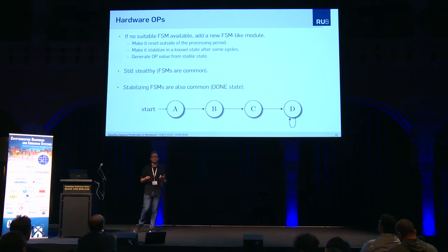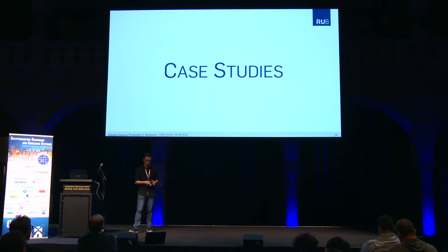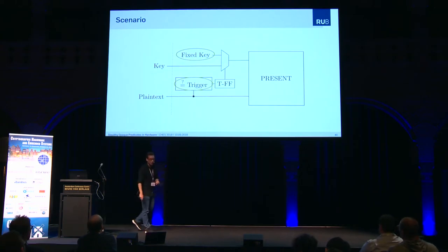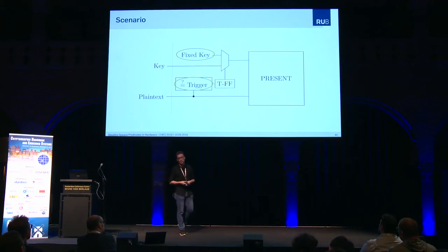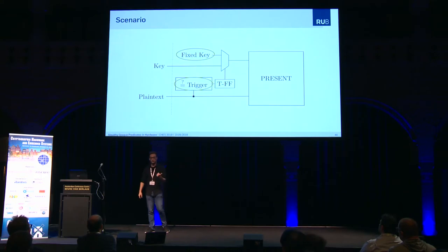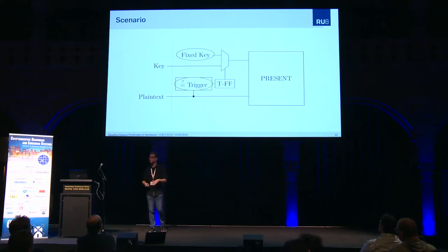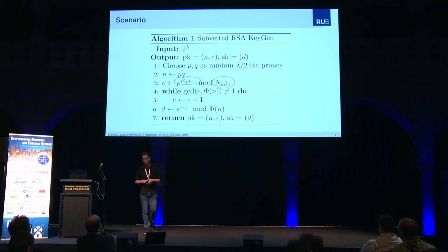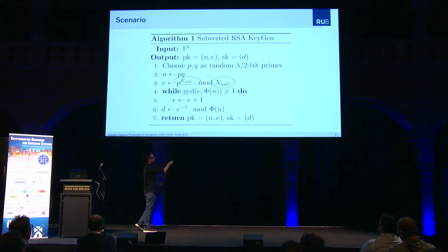So let's look at some case studies we did to assess the overhead introduced. We have two scenarios. The first one is a PRESENT encryption core which is Trojanized with a plaintext-triggered fixed key: if a specific plaintext arrives, the core exchanges the user-supplied key with a fixed internal key. We used our opaque predicates to obfuscate the two constant values — the comparator value and the fixed key. The second case study is a subverted RSA core with a kleptographic attack. There are two constant values — an adversary-chosen exponent and a modulus hard-coded into the design — and we again used opaque predicates to hide them.